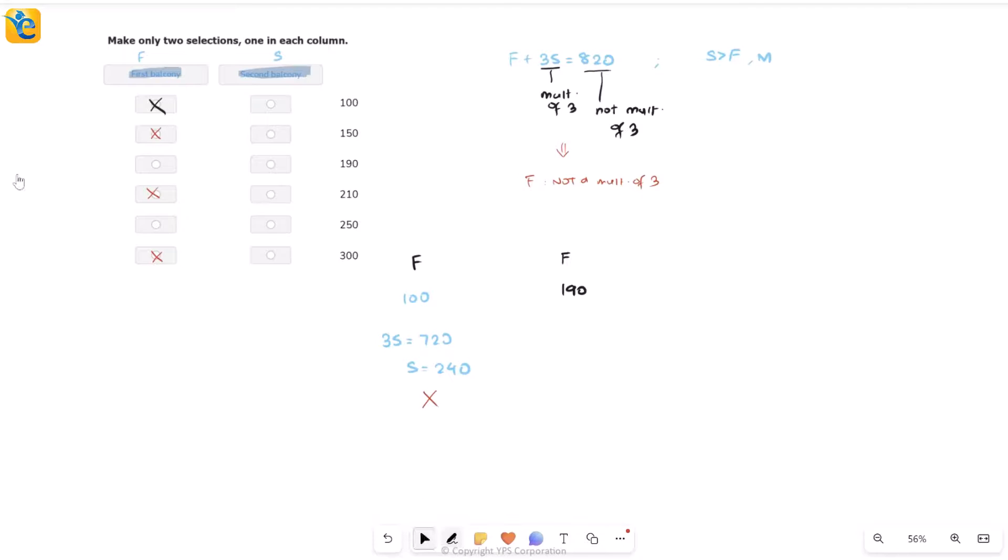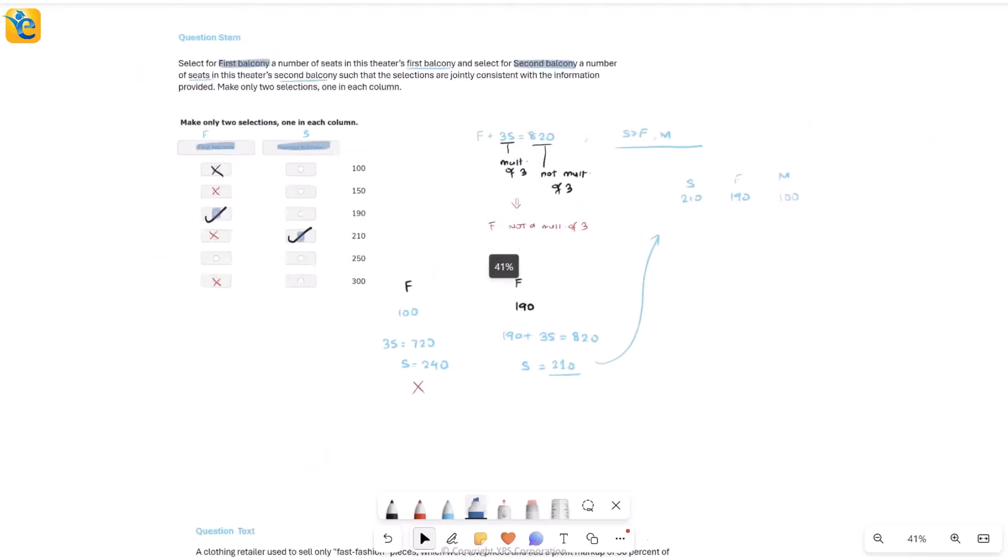Next, f is 190. When you plug that in, 190 + 3s = 820, this gives you s = 210. Now is 210 in the table? It sure is, so I seem to have found my pair. But I'm going to make sure that this constraint is also satisfied. If my s is 210 and f is 190, m would be 100. Now is s the greatest out of them? Yes, s is the greatest out of them. Therefore I have found the correct pair: s = 210 and f = 190, and we're done.